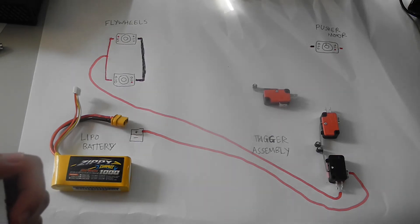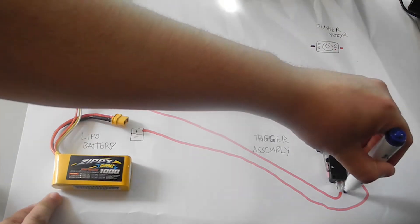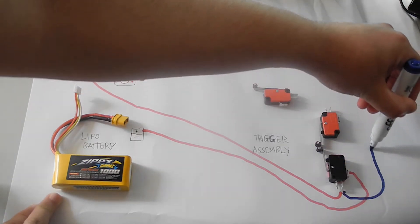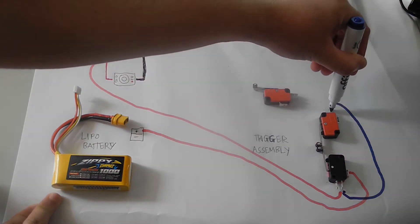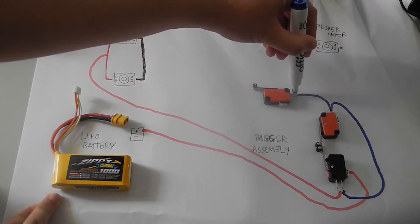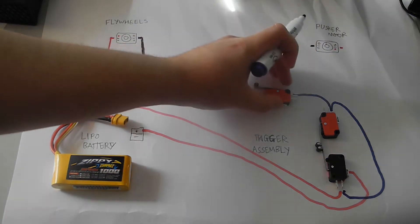To supply power to the main trigger and to the pusher motor, a blue wire will go from the normally open on the rev trigger switch to the normally open on the main trigger switch.